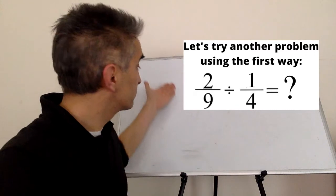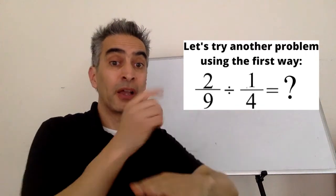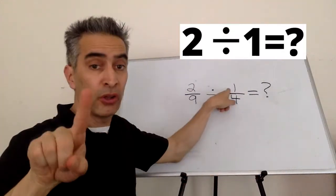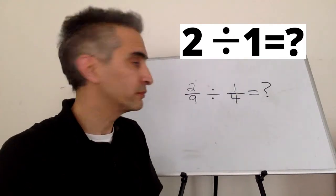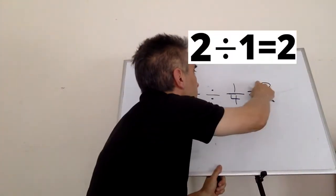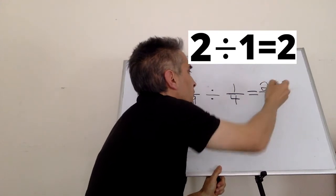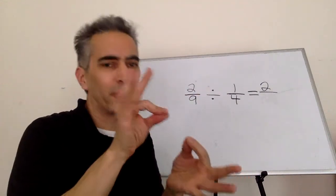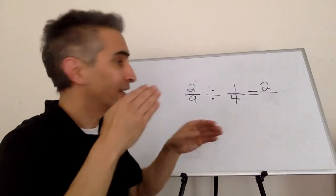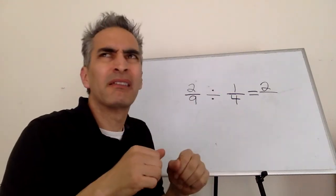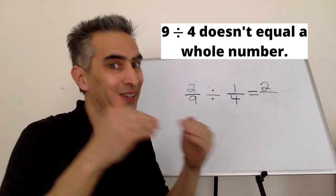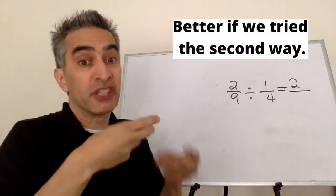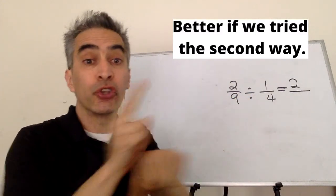Let's try another example: 2 ninths divided by 1 fourth. This 2 divided by this 1 equals 2 — that's a whole number, it's perfect. But 9 divided by 4 does not equal a whole number, so we can't use the first way. It's better that we solve this one using the second way.